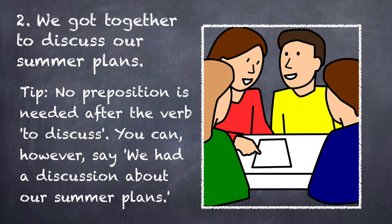Sentence number two: We got together to discuss our summer plans. No preposition is needed after the verb 'to discuss.' Let's discuss this. I want to discuss something with you. You can, however, say 'we had a discussion about our summer plans.' So when 'discussion' is used as the noun, then you could say 'about.'